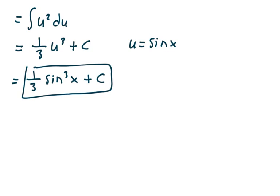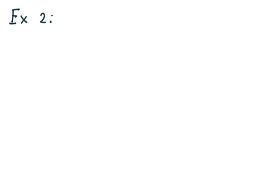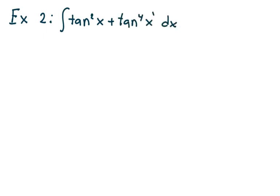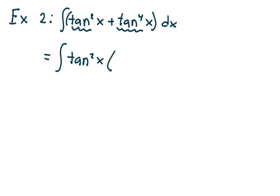That was example 1. Let's take a look at example 2. We have the integral of tangent squared x plus tangent to the fourth x dx. I would not break up this integral — this is one of those integrals that just takes some experience. What I would do is factor out a tangent squared x. When I factor out a tangent squared x, I get 1 plus tangent squared x dx.